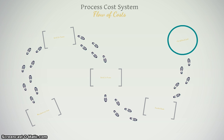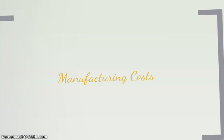With job order costing, products are very individualized or specialized, so we keep up with costs separately. With a process cost system that's not the case — we don't need to keep a job cost sheet for each order because each order is the same thing, so we're going to track costs a little differently.